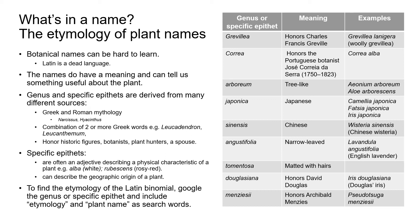Let's talk now about the meaning of Latin names. There's a lot of memorization in this class and botanical names can be hard to learn, but the learning process is a little easier when we know that the Latin names do have a meaning and can tell us something useful about the plant. Latin may be a dead language, but there are many English words that have Latin roots, and Spanish, Italian and French are all Latin-based languages. So we can use any knowledge we have of these languages to help us understand and remember plant names.